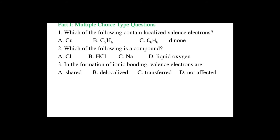A compound is formed when different atoms combine. A molecule is formed when same atoms combine. HCl is a compound because hydrogen and chlorine are different elements or different atoms combining to form a compound, which is hydrochloric acid. Sodium is an element. Chlorine is also an element. Liquid oxygen O2 is a molecule, which is formed from two atoms of oxygen.